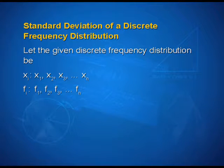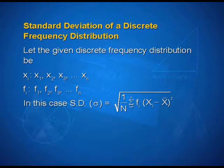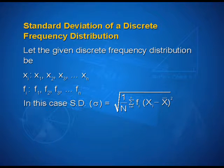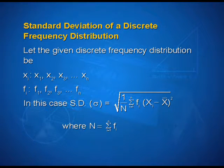Now let us study about the standard deviation of a discrete frequency distribution. Let the given discrete frequency distribution be xi varying from x1, x2, x3 to xn, and frequencies ranging from f1, f2, f3 to fn correspondingly. In this case, standard deviation sigma is equal to the positive square root of 1 upon n into summation i from 1 to n of fi into xi minus x bar the whole square, where n is equal to summation i from 1 to n of fi.